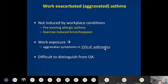Work-exacerbated asthma — where pre-existing allergic or eosinophilic asthma is aggravated by workplace exposures like exercise, cold air, or irritants — is important to distinguish from sensitizer-induced occupational asthma, as management is quite different. If a sensitizer is identified, you'll want to remove the worker from exposure. But if you're merely aggravating pre-existing asthma, you can often allow the worker to remain near the workplace while implementing measures to prevent exposure or stepping up treatment.